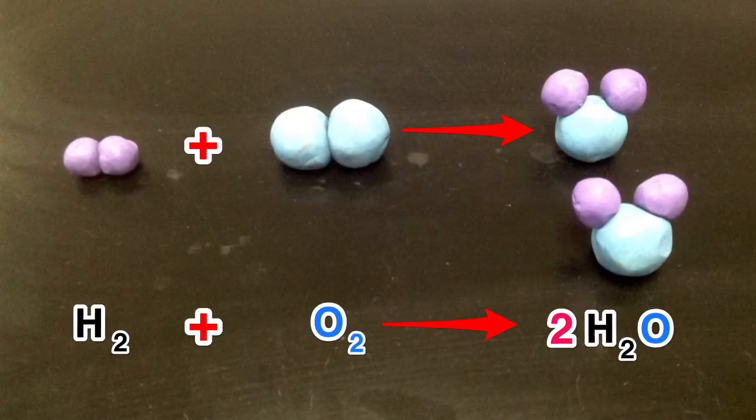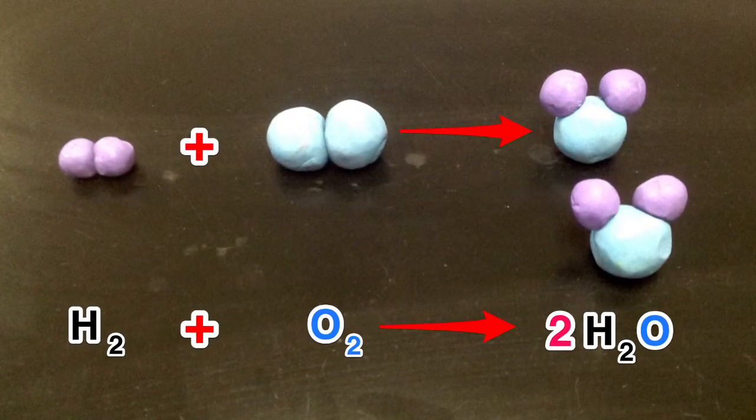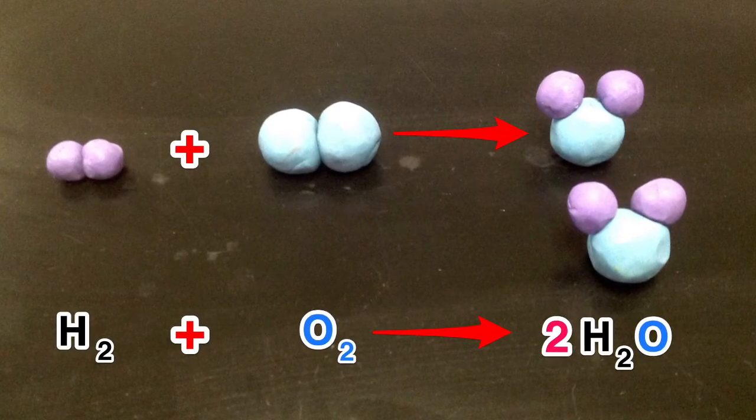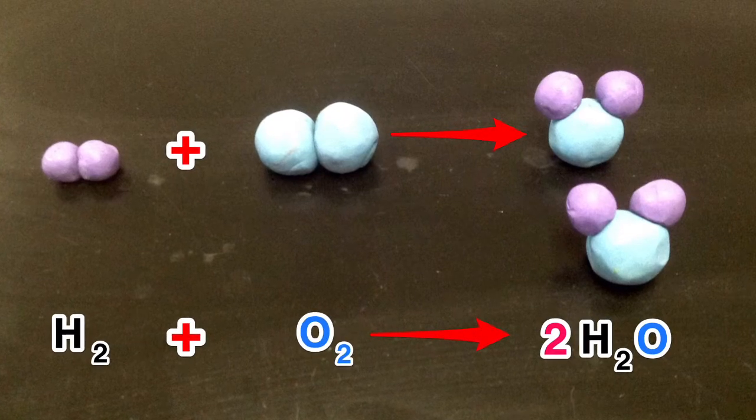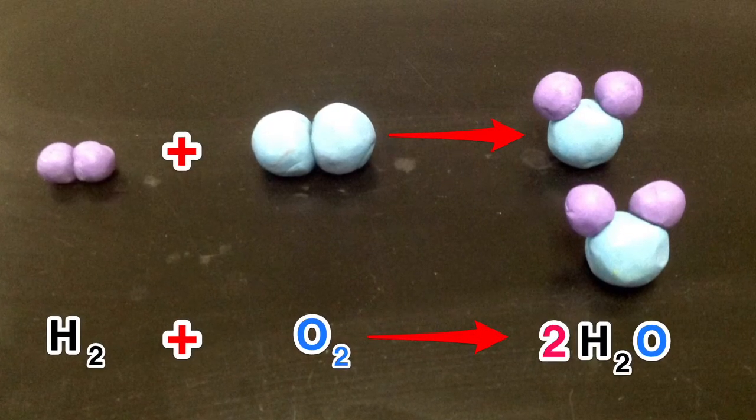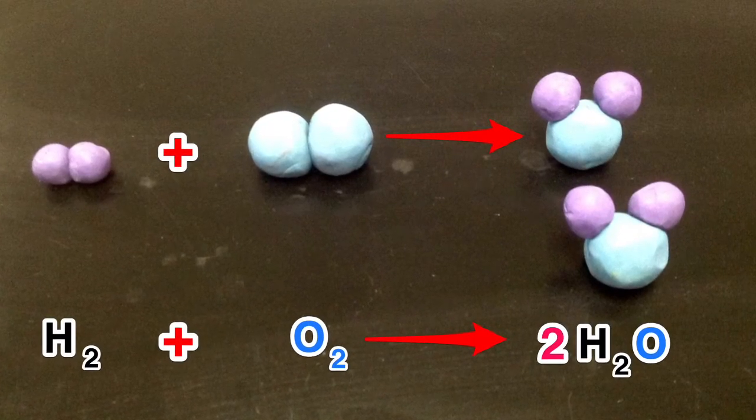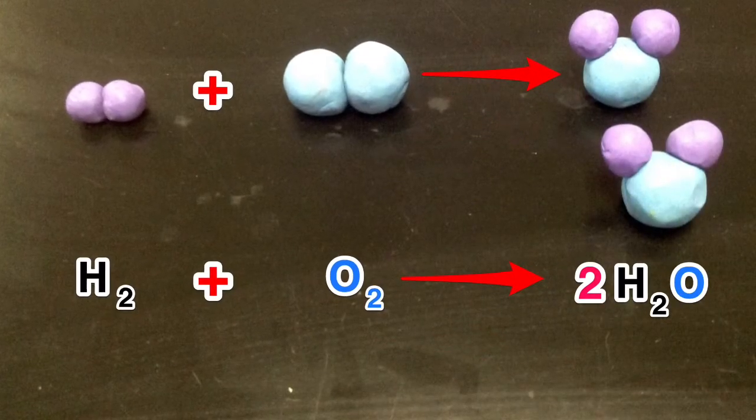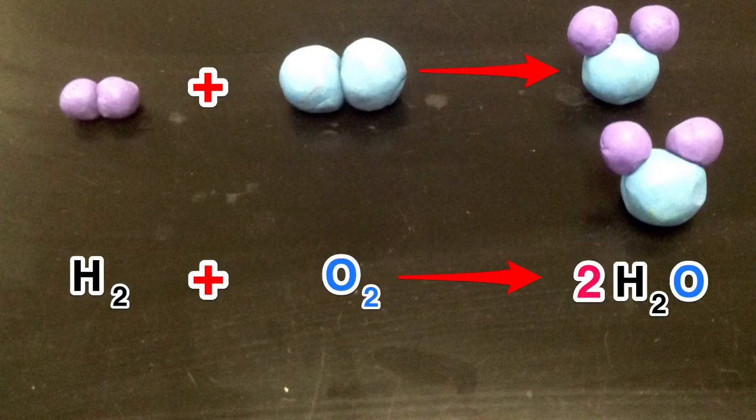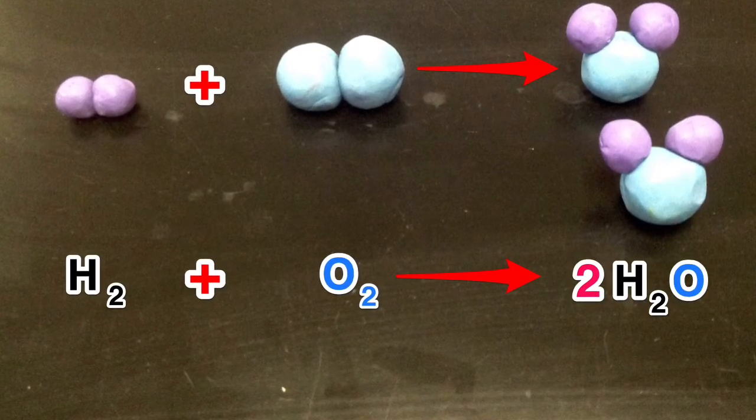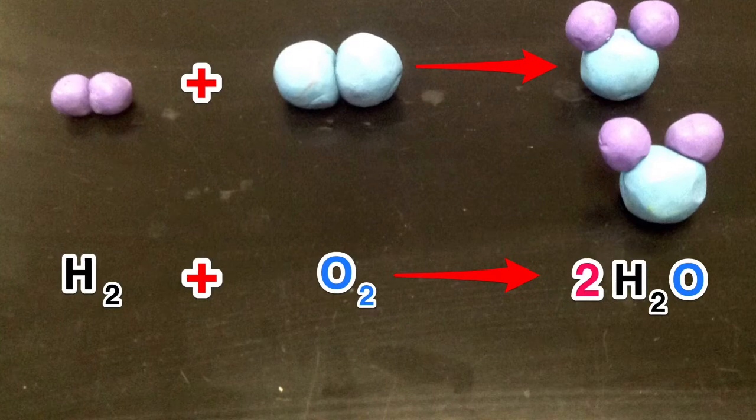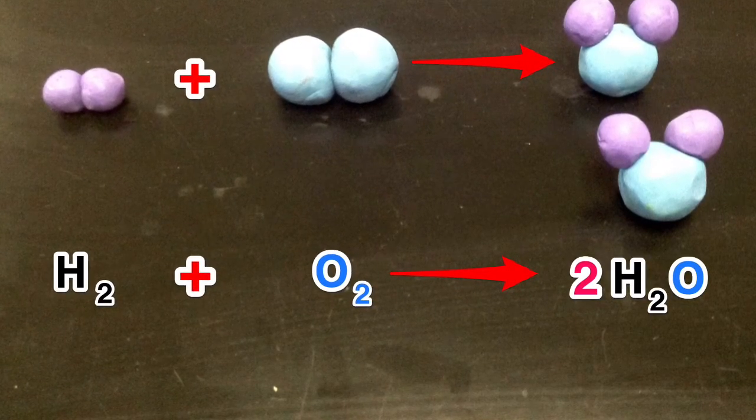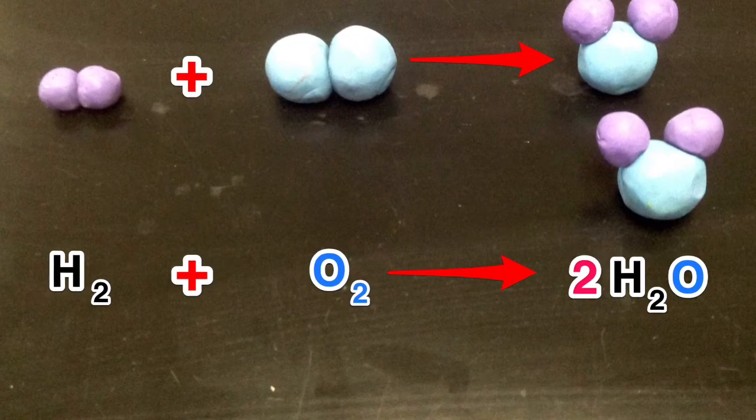To begin balancing this equation we will add a second water molecule to the right hand side. By placing a coefficient of two in front of the H2O we have two molecules of H2O. This corrects for the oxygen which now gives us two oxygen atoms on the right to match the two oxygen atoms on the left, but the hydrogen now has four on the right and only two on the left. So we must continue in the process of balancing the equation.